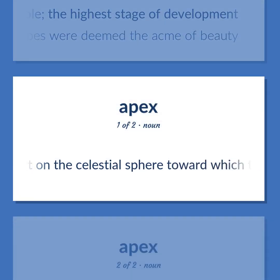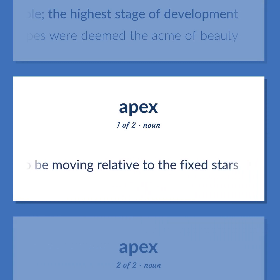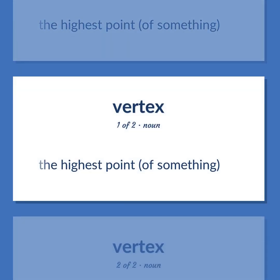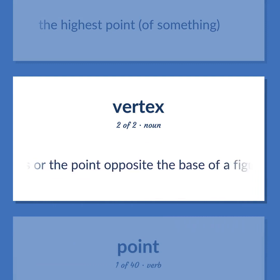Apogee: The point on the celestial sphere toward which the sun and solar system appear to be moving relative to the fixed stars. The highest point of something. Vertex: The point of intersection of lines, or the point opposite the base of a figure.